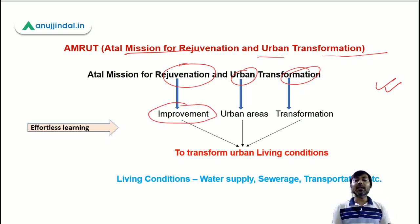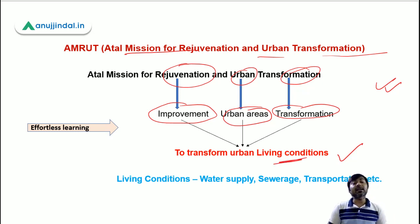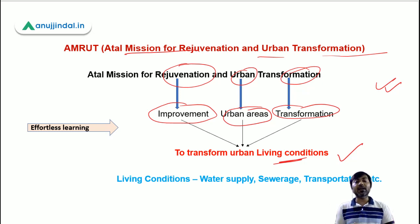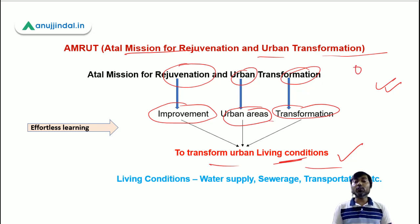Rejuvenation means improvement, Urban means urban areas, and Transformation — we all know what transformation means. When we collaborate these three words, this mission is to transform urban living conditions. And what are the living conditions? They include water supply, sewerage, waste management, transportation, lightning, street lights — all these things are part of living conditions. So you can easily identify the objective of this scheme.